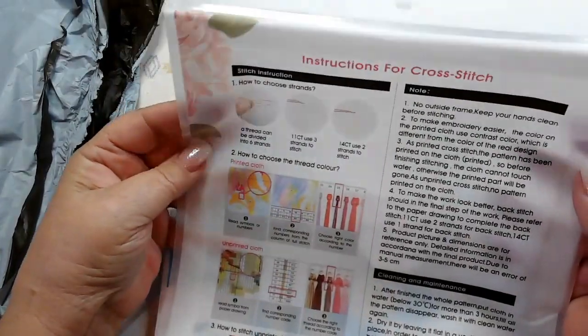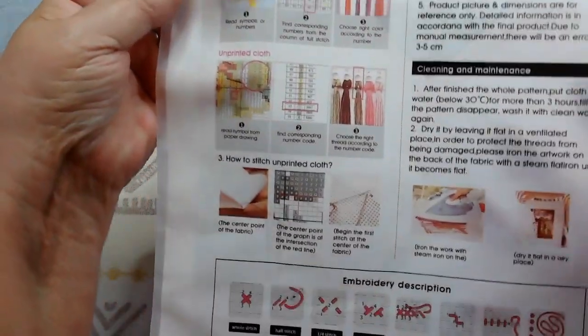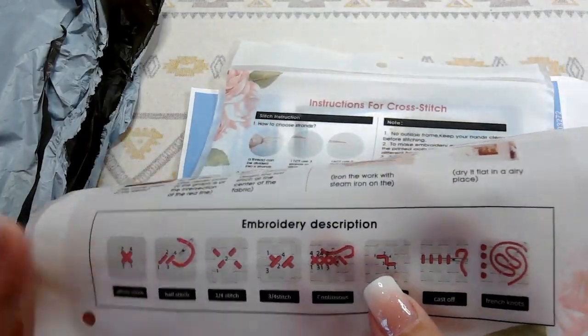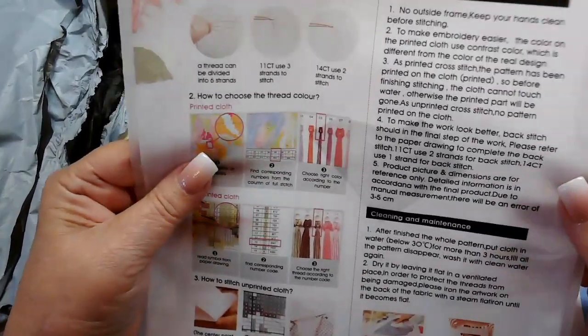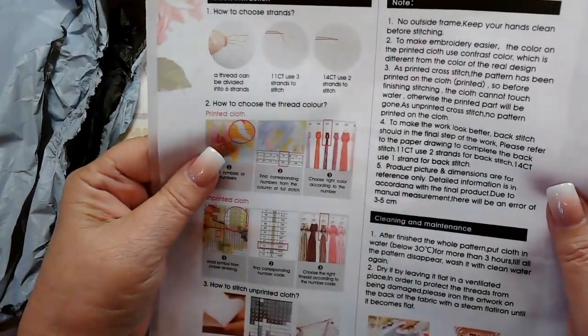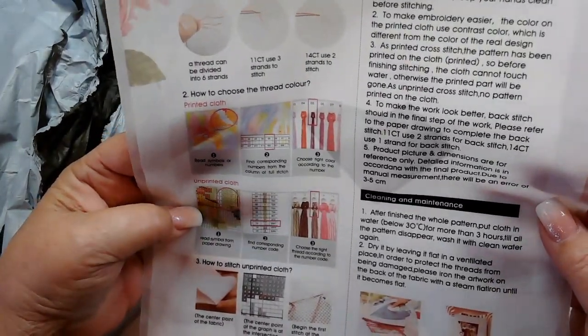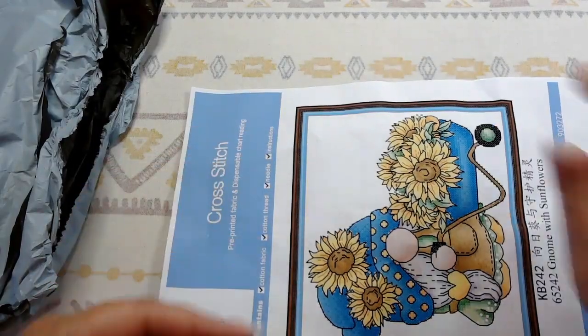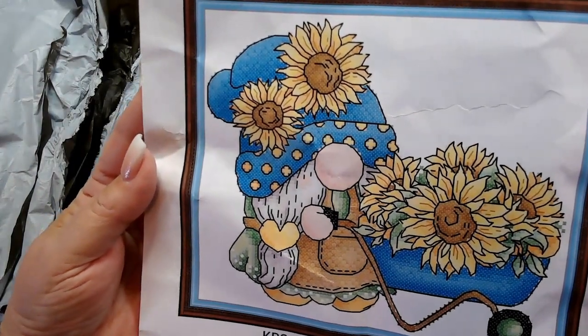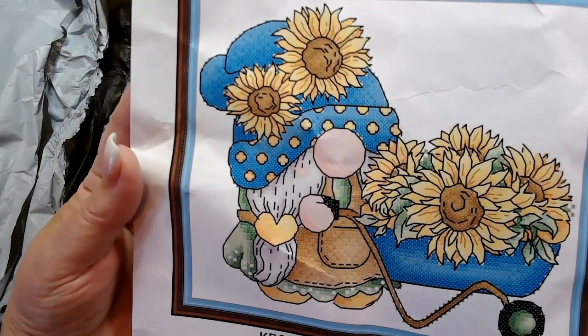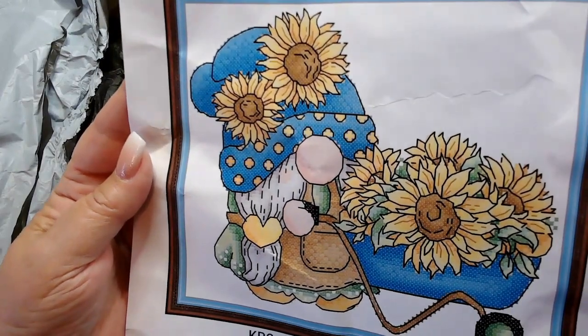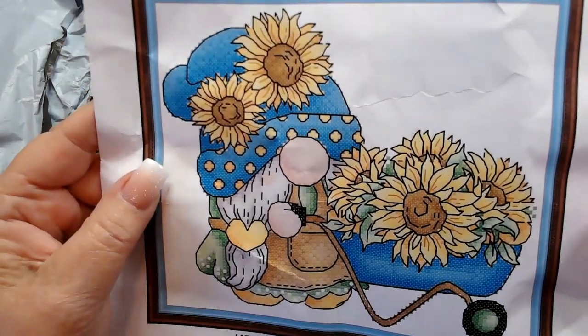It is a 14 count. You'll use two strands of thread with that, and it's not real big. On the back are the standard Joy Sunday instructions for doing your cross-stitch, everything you need to know, diagrams of the stitches, and I think you'll probably only need to use full stitch and backstitch, but it shows you how to do it, how to start.